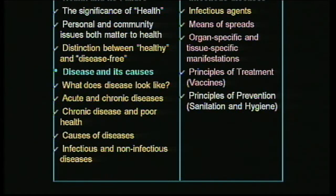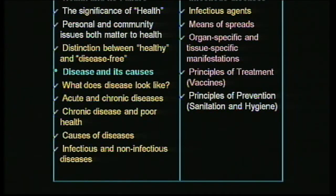We have discussed quite a bit in the previous two sessions — what health is, what disease is, what a disease looks like, what acute and chronic diseases are, what causes disease, infectious and non-infectious diseases, and what the agents for infections are. Most recently, in the last session, we discussed mostly about means of spread — how diseases are spread, elaborately discussing the different ways diseases can spread, especially focusing on zoonotic diseases.